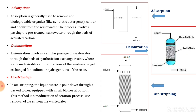Adsorption is generally used to remove non-biodegradable organic material, colour, and odour from wastewater. The process involves passing the pretreated wastewater through a bed of activated carbon. The colour, odour, and non-biodegradable organic material adhere on the surface of the activated carbon, causing separation of such matter from the influent. The clear effluent is then taken out, and the adsorbent is regularly and routinely replaced.